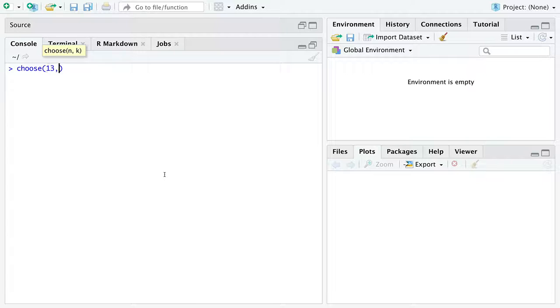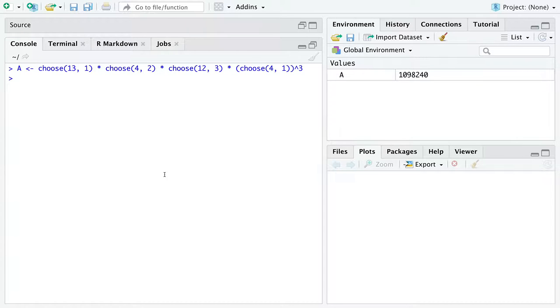We start with 13 choose 1 times 4 choose 2 times 12 choose 3 times 4 choose 1 to the power of 3. I'm going to call this integer 'a,' even though I mean the cardinality of A.